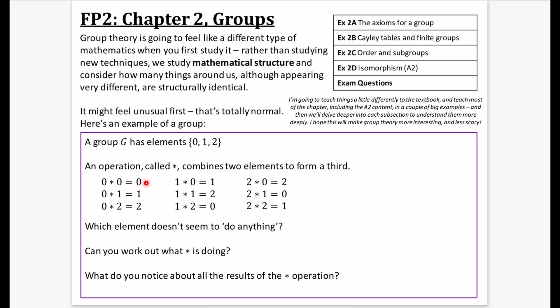But what this operation does, star, is it combines two elements to form a third. So here, when you combine 0 with 0, you get 0. 0 with 1, you get 1. 0 with 2, you get 2. Et cetera. With all of the possible combinations that we have of these three elements, we've obviously got nine different ways of combining these three elements.